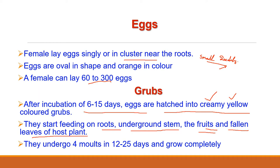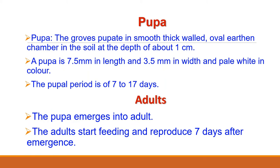The newly hatched grubs are creamy yellow in color with a brown head and prothorax, and are quite active. As they remain below the soil surface, they start feeding on roots, underground stem of the creeper, old fallen leaves and fruits of their host plant lying in contact with the soil. After 12 to 25 days, they attain full-grown grub stage by passing through 4 moults. Full-grown grubs move in the soil and pupate in smooth, thick-walled, oval and waterproof earthen chambers at a depth of about 1 cm. The pupa is 7.5 mm in length and 3.5 mm in width, pale white in color, with a pupal period of about 1 to 3 weeks.